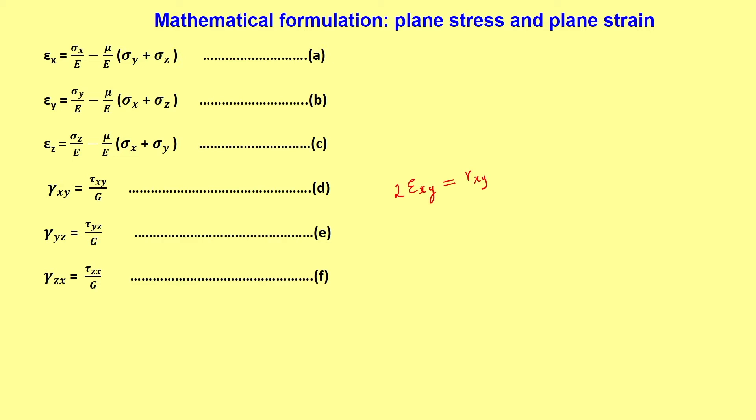We will start with this. Now, for plane strain or plane stress — in the case of plane strain, the given condition is that strain equals zero in one direction. We need to have the inverse of this relationship as well, that is stress in terms of strain. Currently this is strain in terms of stresses, so we will try to find the inverse, that is stress as a function of strain.